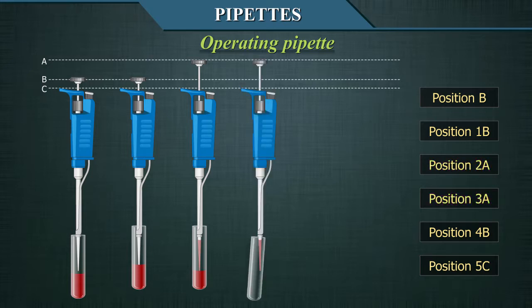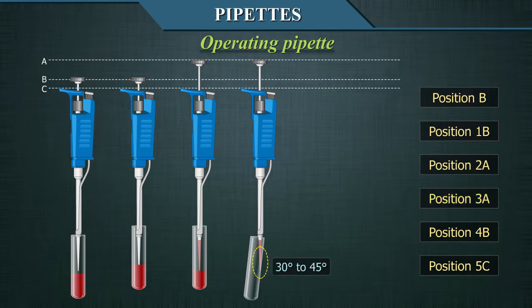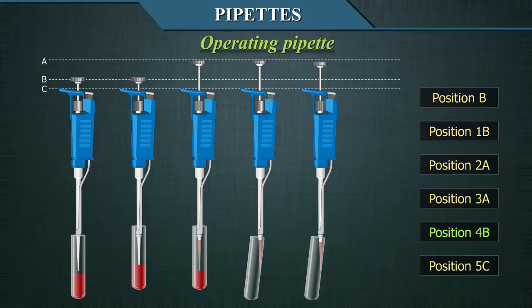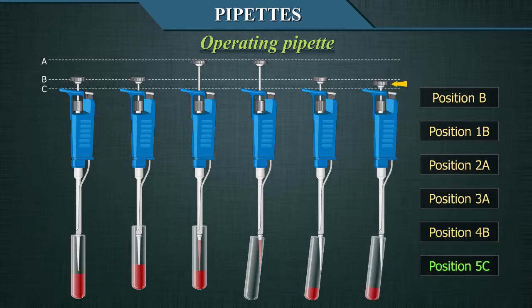To release, place the pipette's tip against the wall of the receiving tube. Verify that the angle formed between the pipette's tip and the wall is between 30 and 45 degrees. Dispense the contents of the pipette by pressing the plunger gently but firmly until reaching the first limit, position B. At all times, maintain contact between the pipette's tip and the wall of the receiving container. Gently slide the tip against the inside wall at 8–10 mm from the tube edge to ensure no drops of liquid remain on the pipette's tip.